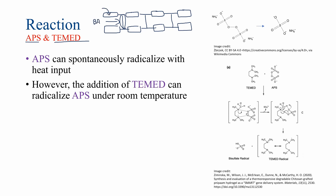The boxes here represent the acrylamide monomers. In order for the polymerization or the linkage of different acrylamide monomers to happen, you need to radicalize APS. APS will essentially be divided into two halves — two bisulfate radicals. These bisulfate radicals are the ones that will facilitate the polymerization of the acrylamide monomers. In addition, it is the bisulfate radicals which form after you radicalize APS that will also facilitate the cross-linking or the reaction of the bisacrylamide with two different polymers of acrylamide.